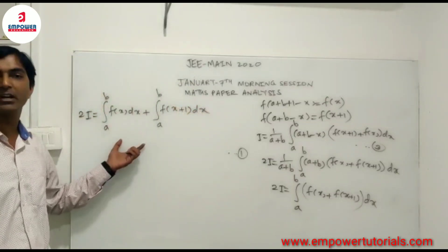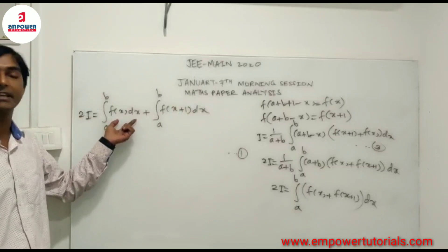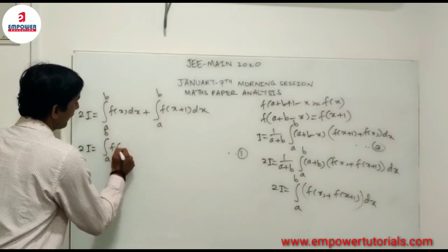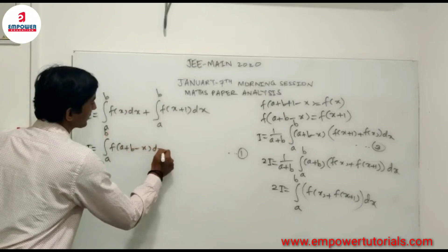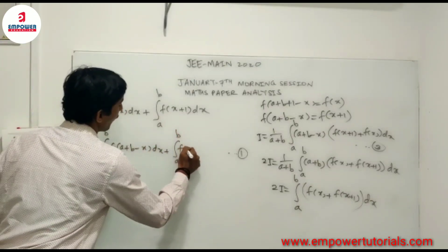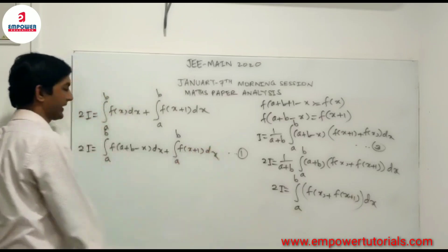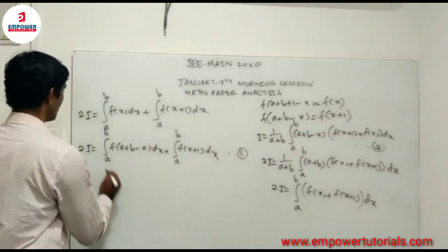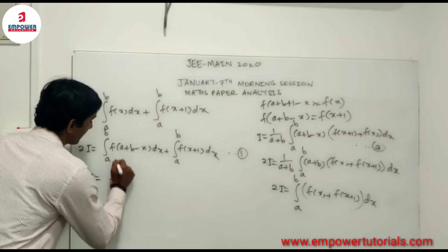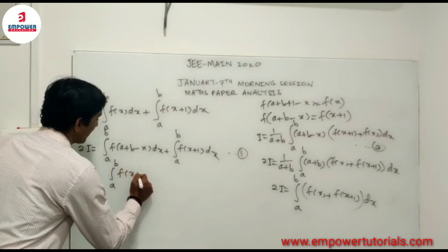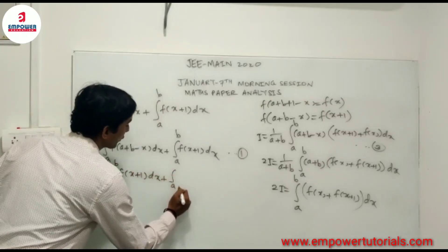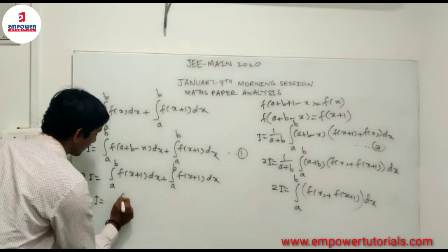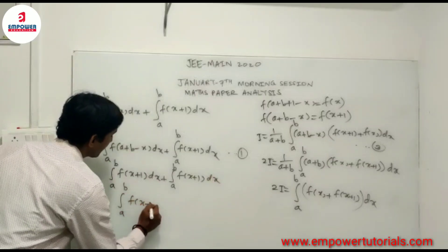We split this into two integrals: 2I = integral from a to b of f(x) dx plus integral from a to b of f(x+1) dx. Applying the same property to the first integral converts it to the integral of f(a + b - x) dx. Since f(a + b - x) = f(x + 1), both integrals become equal, giving 2I = 2 times the integral from a to b of f(x+1) dx, so I = integral from a to b of f(x+1) dx.